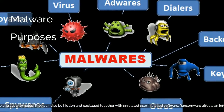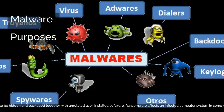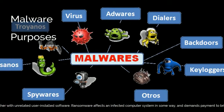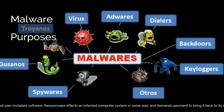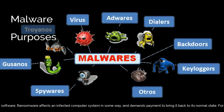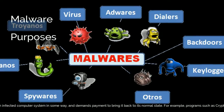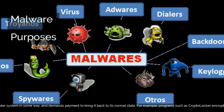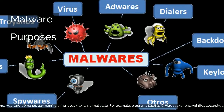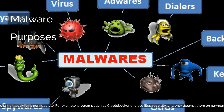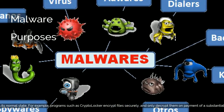Ransomware affects an infected computer system in some way, and demands payment to bring it back to its normal state. For example, programs such as CryptoLocker encrypt files securely, and only decrypt them on payment of a substantial sum of money.